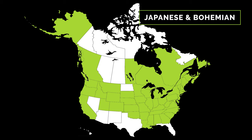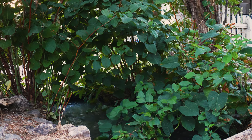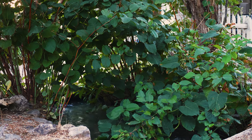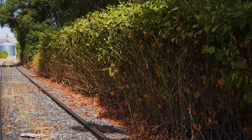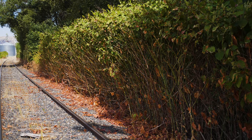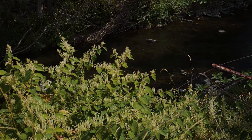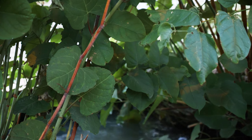Compared to giant knotweed, Japanese and bohemian knotweed are more common and more regularly distributed throughout North America. Knotweeds are frequently found in riparian, wetland, or lowland plant communities. They can inhabit a variety of sunlight, soil moisture, and human disturbance conditions, but have become especially problematic in full sun locations along the banks and floodplains of rivers and streams, and on moist roadsides.